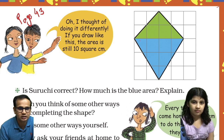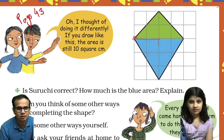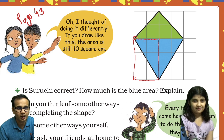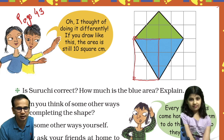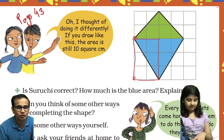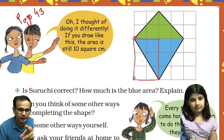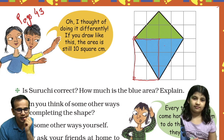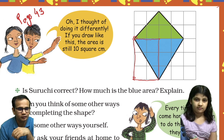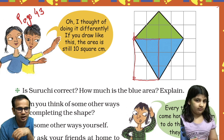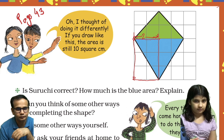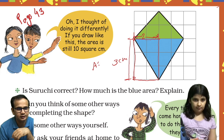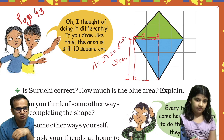I'll take this big rectangle from here. This line is dividing it into two parts. So if I get the area of this rectangle — the area of this rectangle is 3 into 2, that is 6 square centimeters.